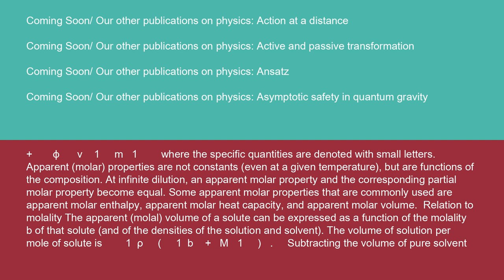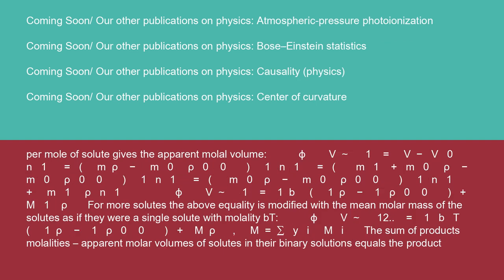Relation to molality: the apparent molar volume of a solute could be expressed as a function of the molality B of that solute and of the densities of the solution and solvent. The volume of solution per mole of solute is (1/ρ)(1/B + M₁), and subtracting the volume of pure solvent per mole of solute gives the apparent molar volume: φV₁ = (V - V₀)/N₁.